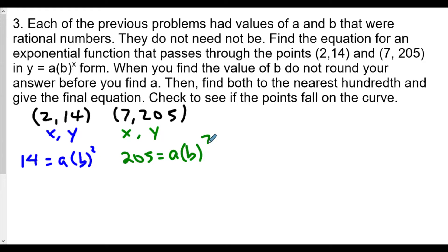We're going to divide one equation by the other because in this case we can divide out the a values. I personally like having our b value with the highest exponent be our numerator. So we'll take 205 equals a times b to the seventh power and divide it by 14 equals a times b to the second power. The a values divide out. On the right side, we have b to the seventh by b squared, which is b to the fifth power. And then we have 205 over 14.